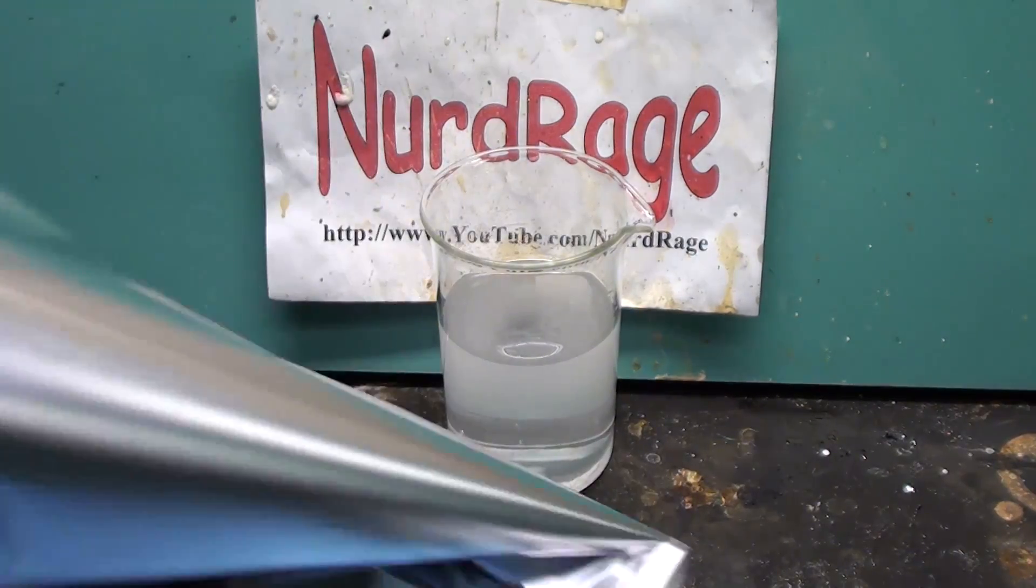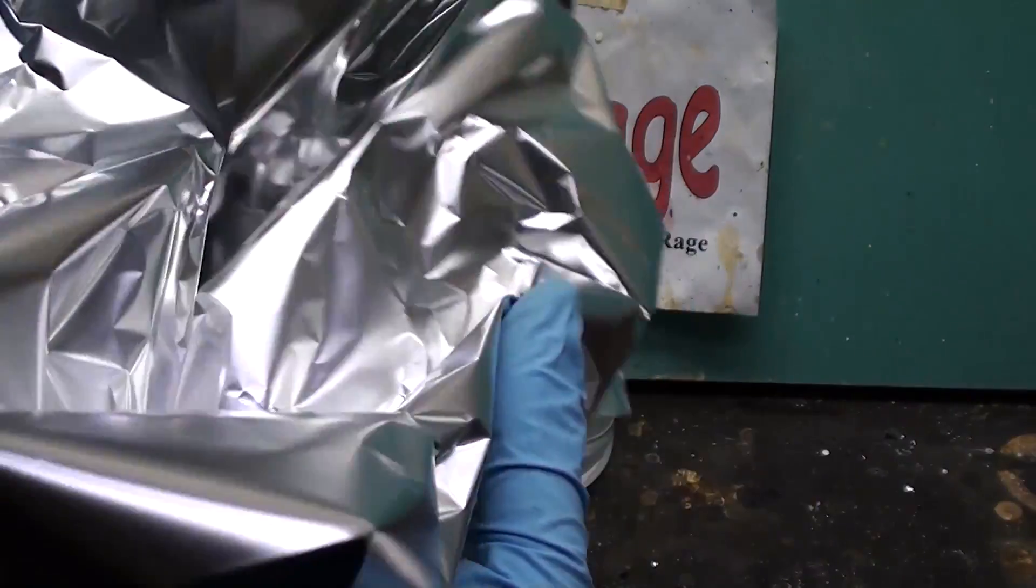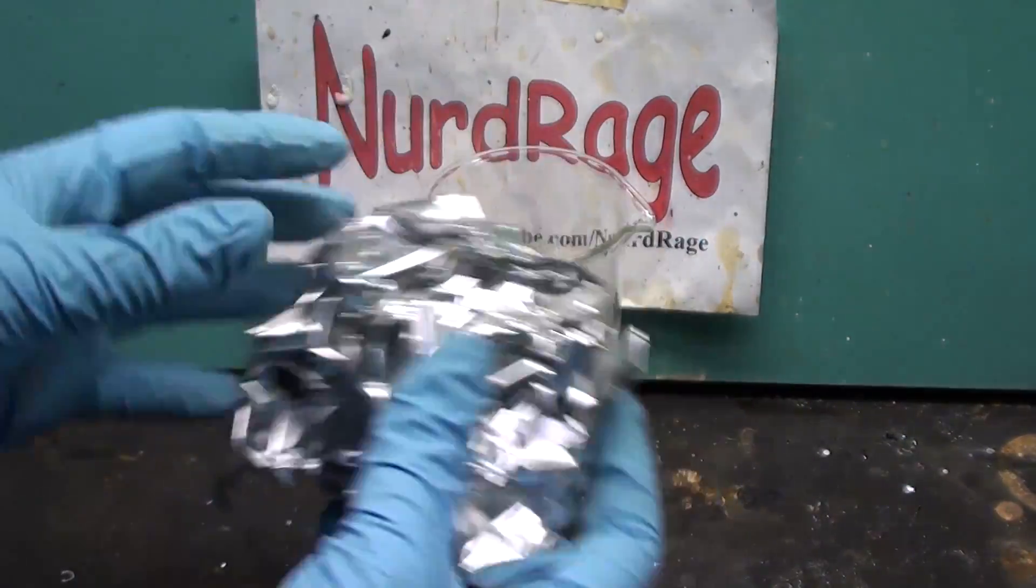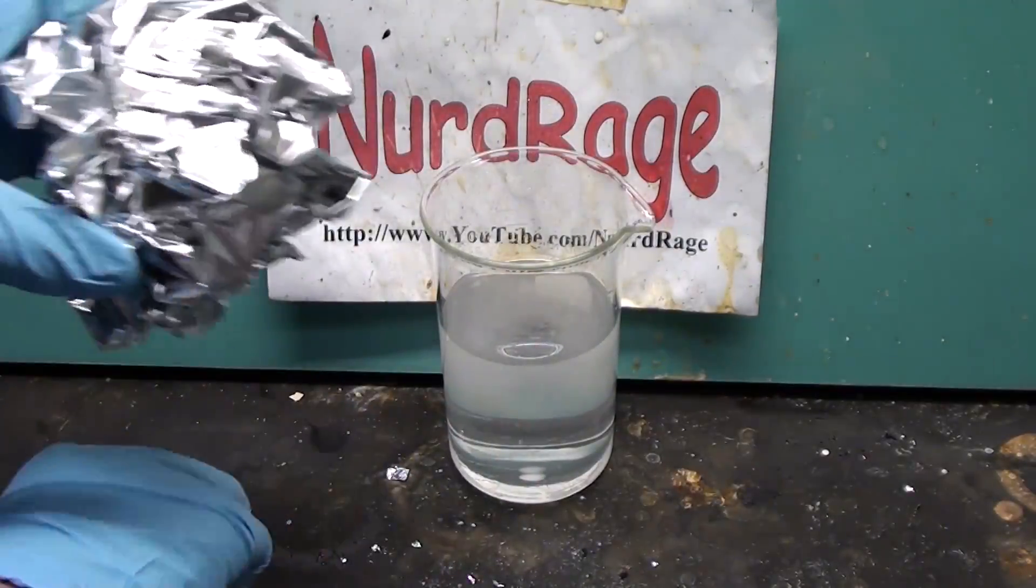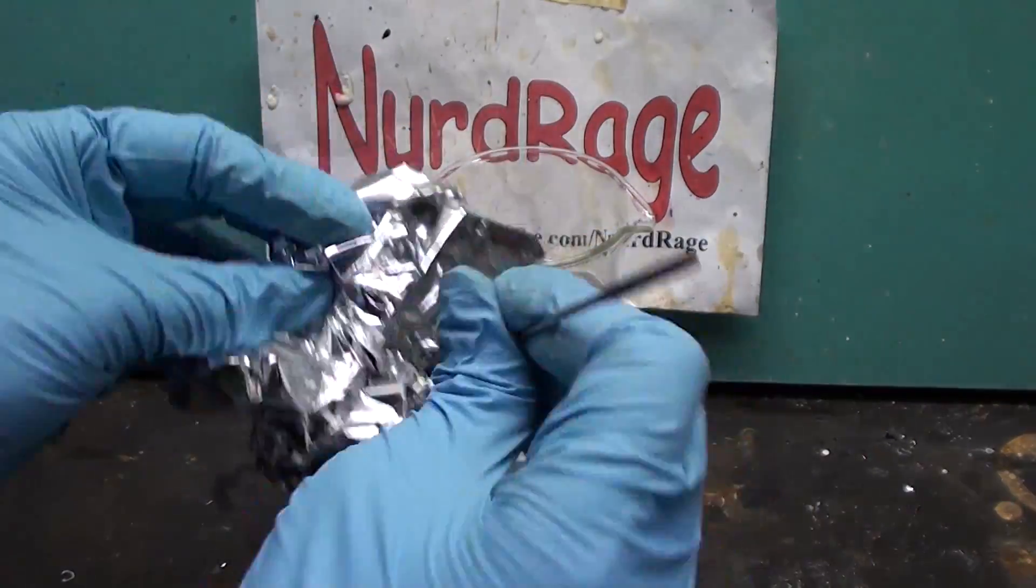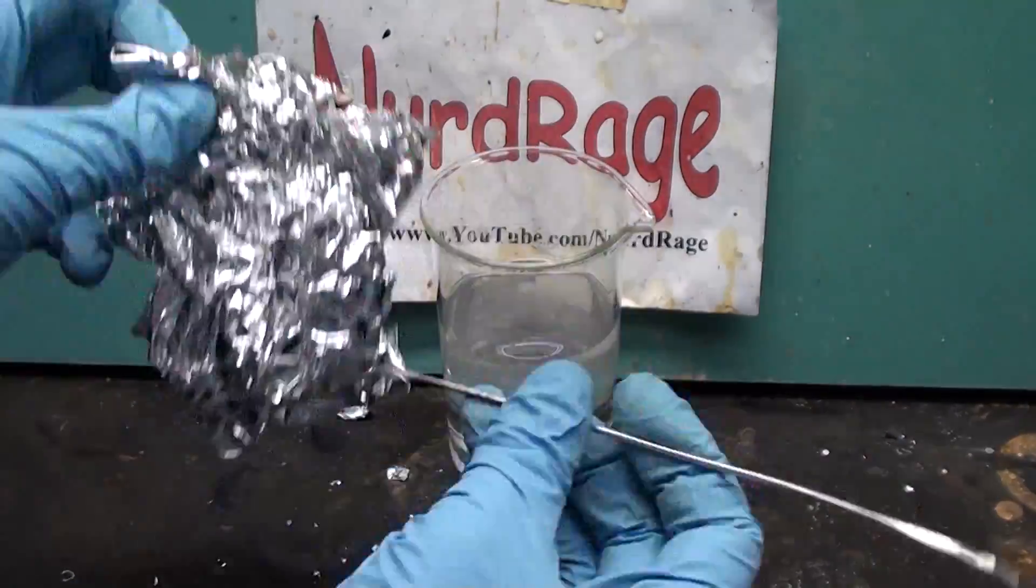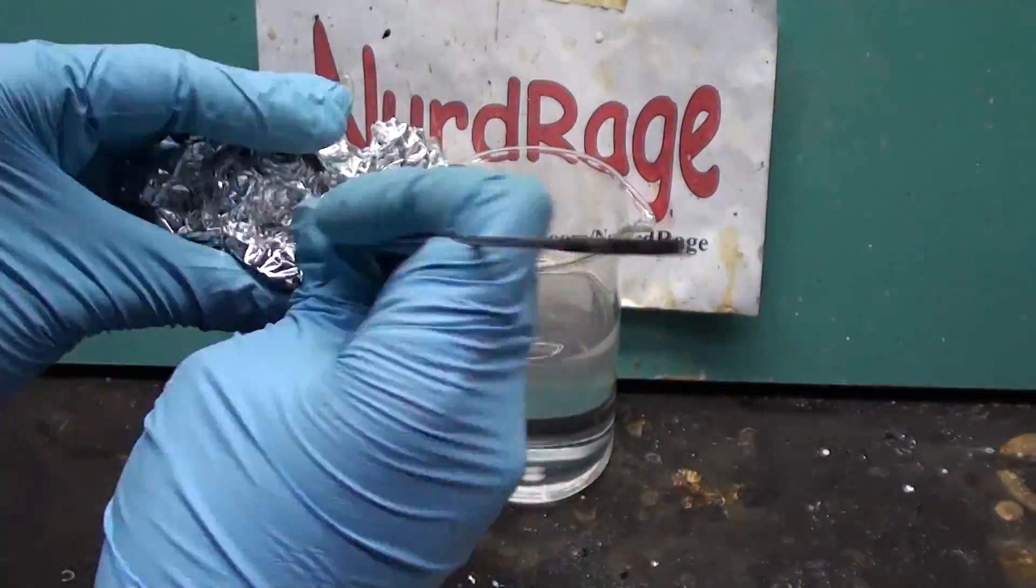Now we get ourselves a couple of square feet of aluminum foil. This will serve as our anode or negative electrode. Bunch it up into a ball but don't pack it too tightly yet. Now get a needle or sharp rod and poke holes through it. The idea is that we don't want it to trap air when we put it into the salt water.